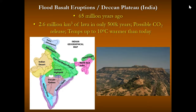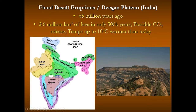A different kind of eruption occurs when volcanoes release more CO2 than SO2. CO2 in the atmosphere warms it rather than cools it. Major eruptions in the past, like those from the Deccan Plateau in India 65 million years ago, are attributed to some of the warmer temperatures on Earth during that time — temperatures were 10 degrees C warmer than today — along with continental positions, orbital cycles, and possible solar maximum.